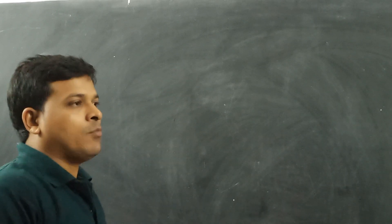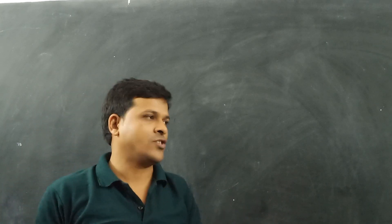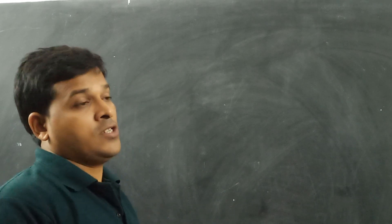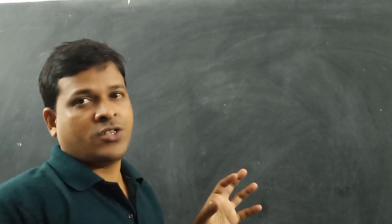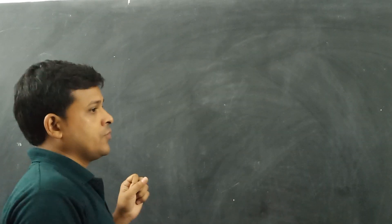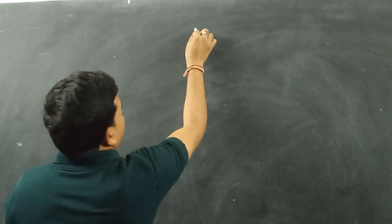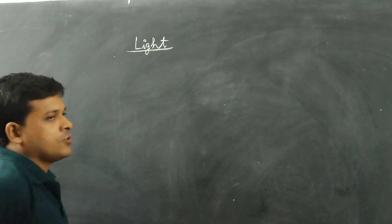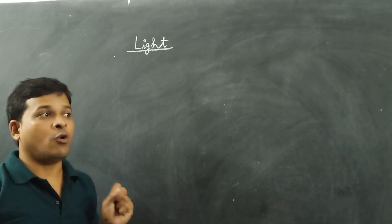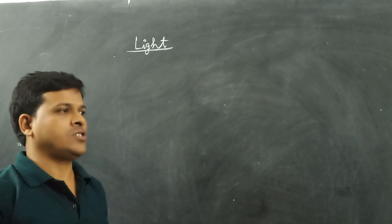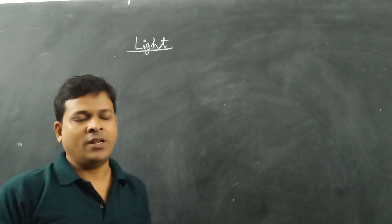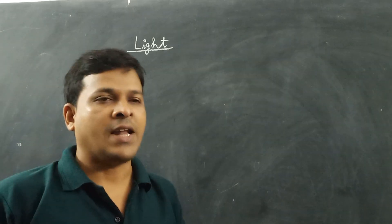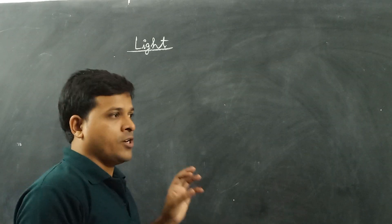Today we will learn about a very simple form of energy which is very essential in our daily life. Life can exist on the earth's surface because of this form of energy. There are different forms of energy that we learnt at the beginning of our class 5 level — heat energy, electric energy, sound energy, and light energy — and their introduction we already learnt.